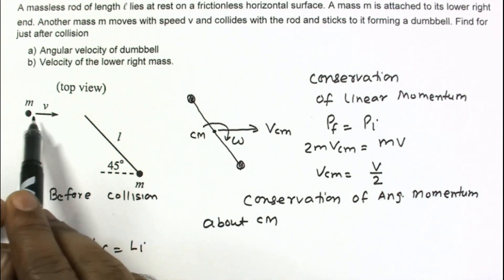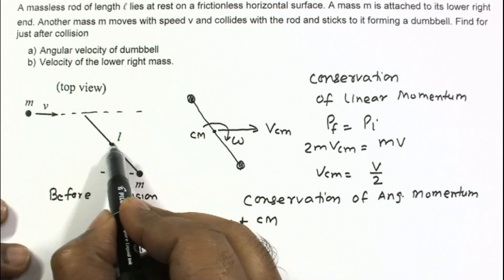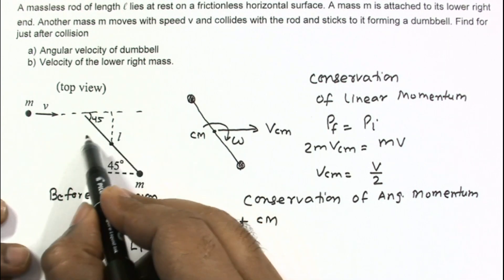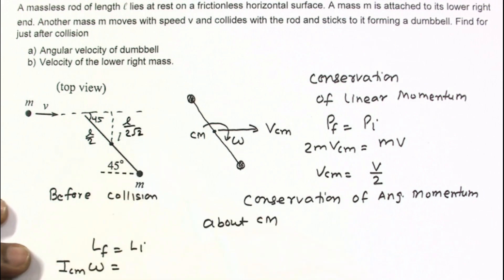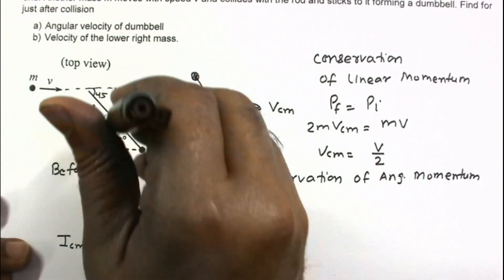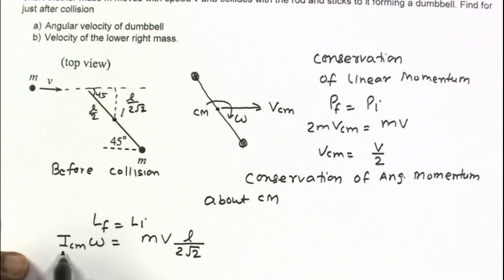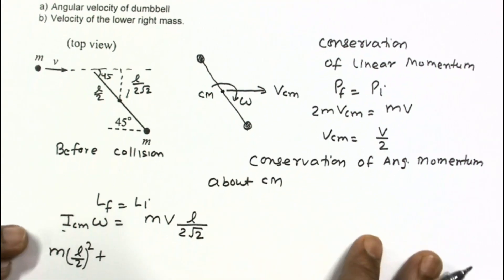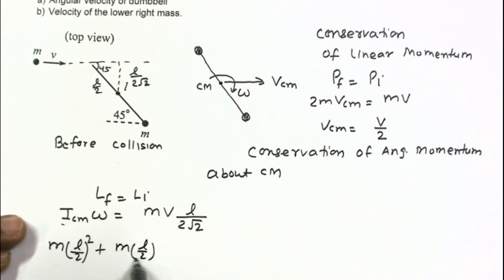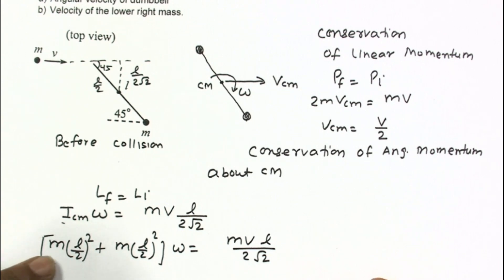L_initial is due to the incoming particle only, with perpendicular distance from the center of mass. Since the angle is also 45 degrees, this perpendicular distance is L/(2√2). So L_initial = M·V·L/(2√2). Now computing ICM: these are two point masses each at distance L/2, so ICM = M·(L/2)² + M·(L/2)² = ML²/4 + ML²/4 = ML²/2. Setting ICM·omega = M·V·L/(2√2) and simplifying, omega = V/(√2·L).